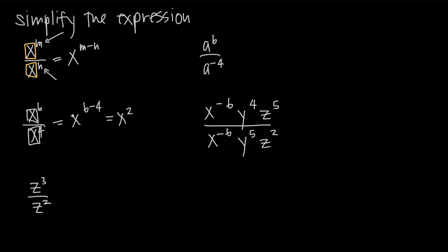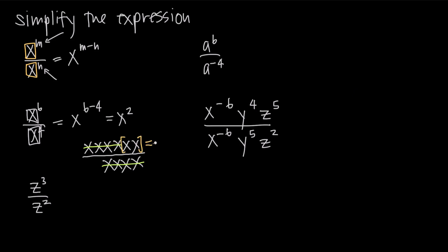The reason this works is because if you think about x to the sixth, that's six x's multiplied together — one, two, three, four, five, six — divided by, in the denominator, x to the fourth, which means four x's multiplied together. If we cancel as many x's as we can, we have four of them in the denominator and four in the numerator, which cancel. That leaves us with just two x's, which is x squared — which is what we found.